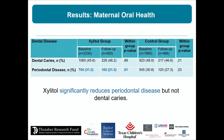Regarding maternal periodontal disease: in the xylitol group there was a significant reduction in maternal periodontal disease. There was not a significant reduction in dental caries. Overall, xylitol led to reduction in maternal periodontal disease, preterm birth, and low birth weight offspring in Malawi — through simply chewing gum.